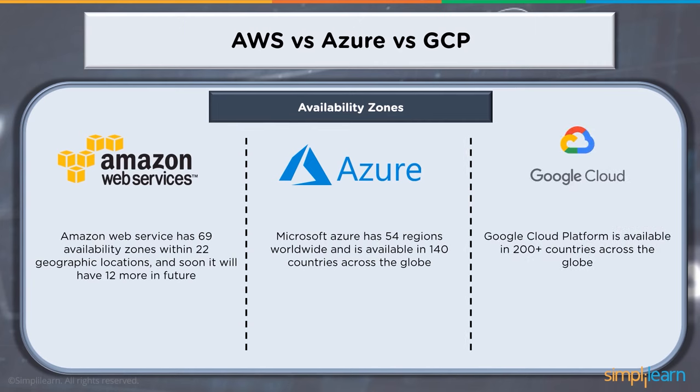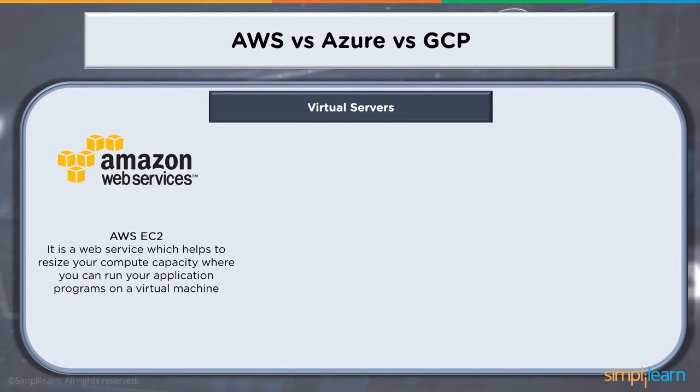When we talk about virtual servers: Amazon's EC2, Elastic Compute Cloud, is a web service helping to resize compute capacity where you can run applications on a virtual machine. Using EC2, you could launch virtual instances with any Linux or Windows distribution, different RAM/CPU/disk specifications, and choose storage — local to the instance, elastic file system, or object storage.